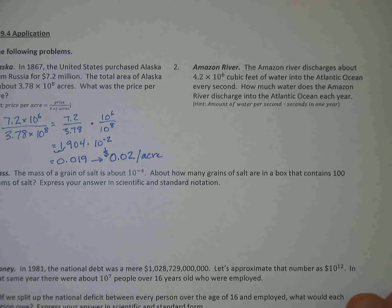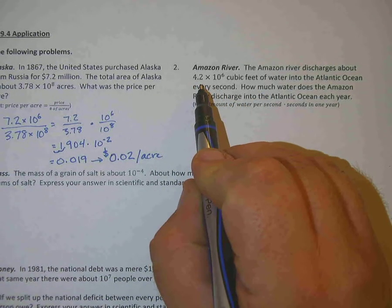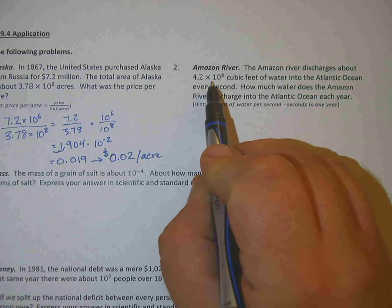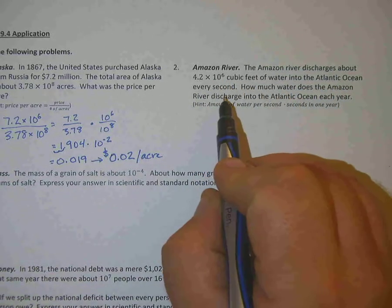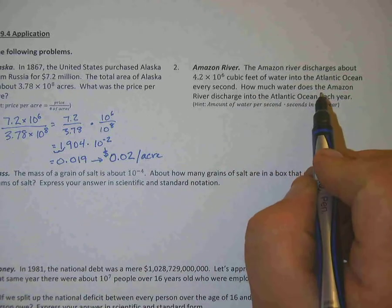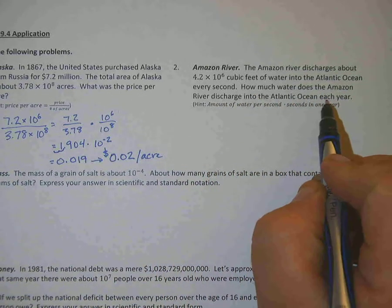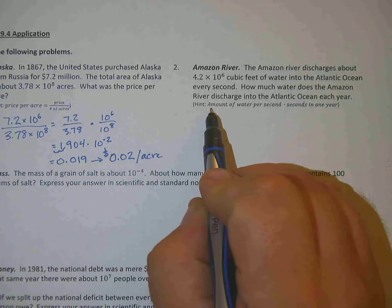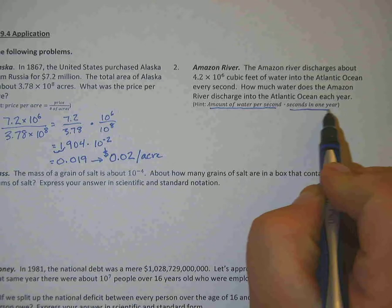Let's look at number two here. Number two is about the Amazon River. For the Amazon River problem, it tells us that the Amazon River discharges about 4.2 times 10 to the 6th cubic feet into the Atlantic Ocean every second. And then how much water does the Amazon River discharge into the Atlantic Ocean each year? So the hint here is we're looking for the amount of water per second times the number of seconds in a year.